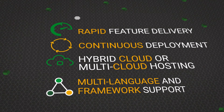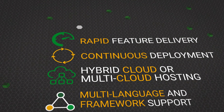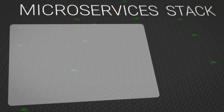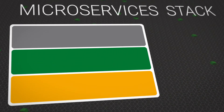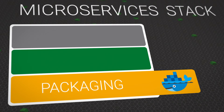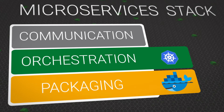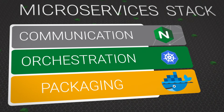There's a variety of open source and proprietary software available to build microservice-based applications. But at a basic level, the microservices application stack needs a packaging layer — likely Docker containers — an orchestration layer to deploy these containerized services (Kubernetes is quickly becoming the industry standard), and some sort of proxy or service mesh to connect the services and apply application logic.